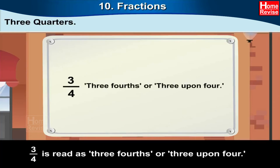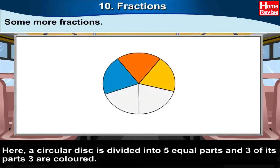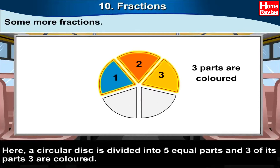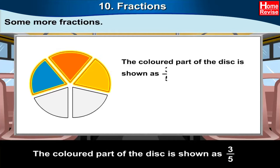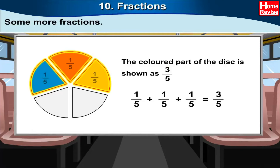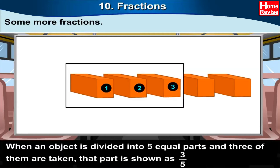Three quarters is shown by the fraction three upon four. Three upon four is read as three fourths or three upon four. Here a circular disk is divided into five equal parts and three of its parts are colored. The colored part of the disk is shown as three upon five. One upon five plus one upon five plus one upon five together make three upon five.